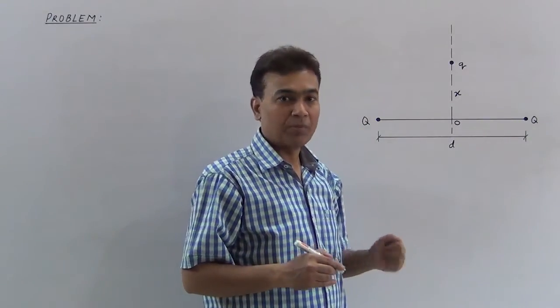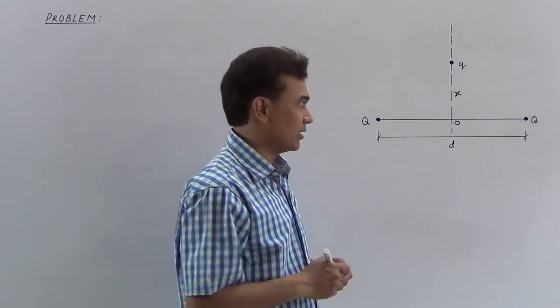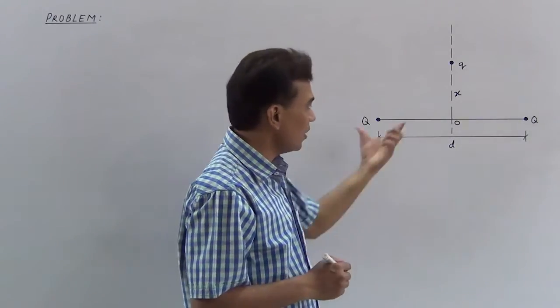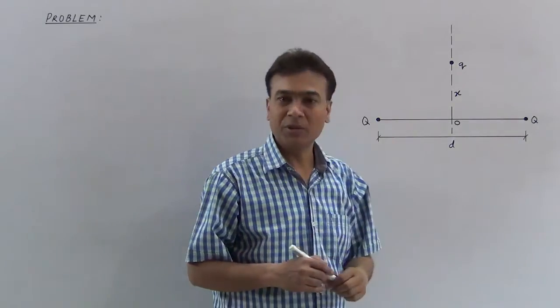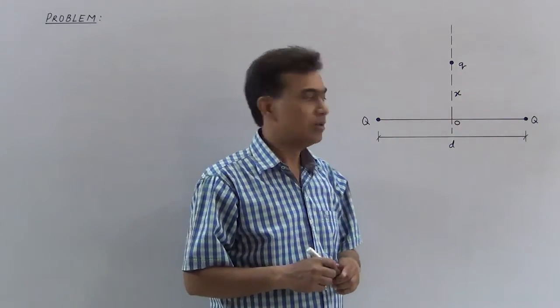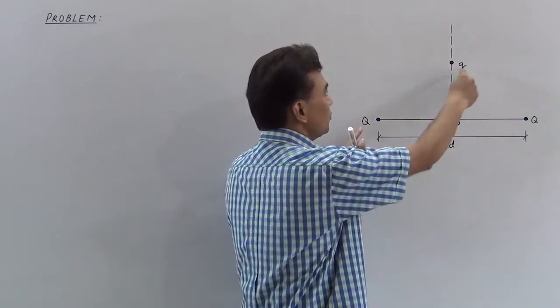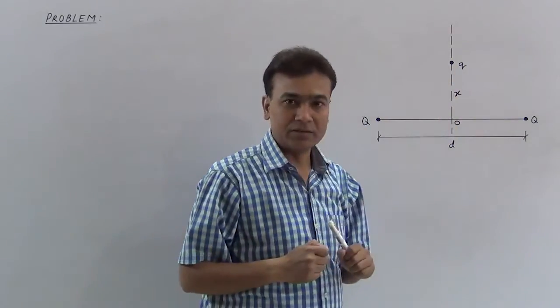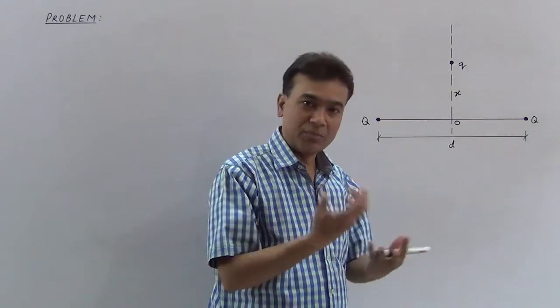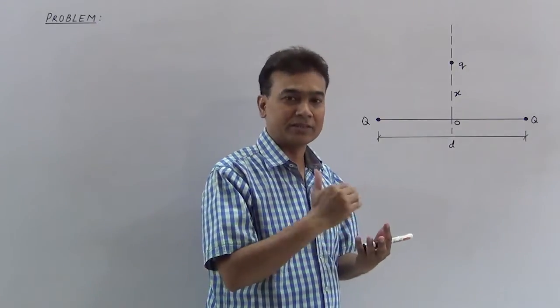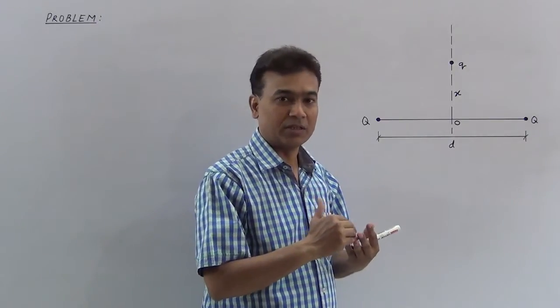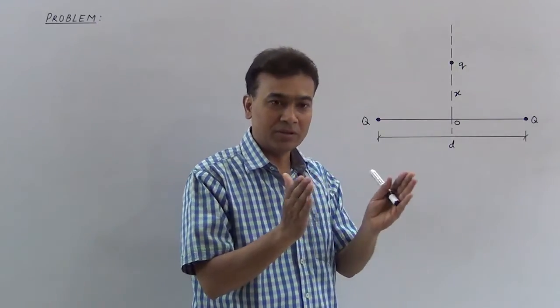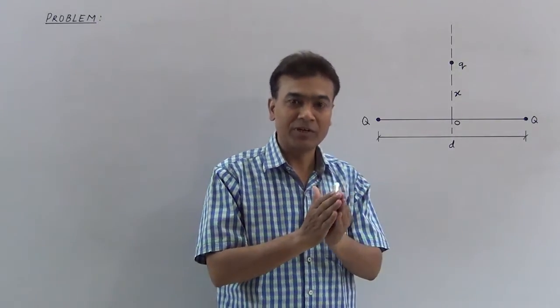Now we start the calculation. Capital Q and small q — if they are like charges, the direction will be the same; if unlike, the direction will be reversed. We work here in magnitude.